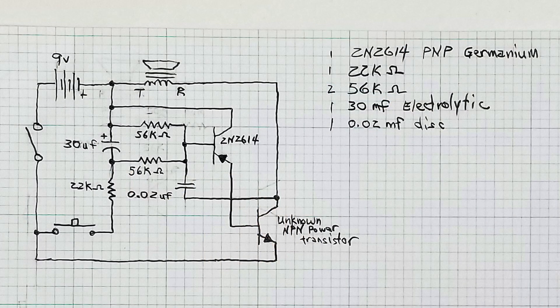That's all there is to it. The 0.2µF capacitor controls the starting frequency, and the 30µF capacitor controls the length of the rise and fall of the pitch.